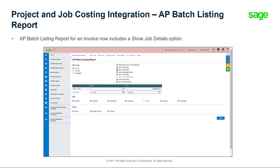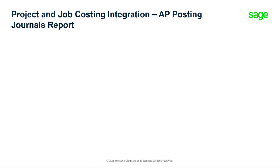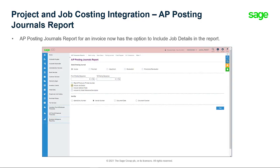For an invoice, the Accounts Payable Batch Listing report now includes a Show Job Details option. Similarly, the Accounts Payable Posting Journals report for an invoice also gives you the option to include job details in the report.